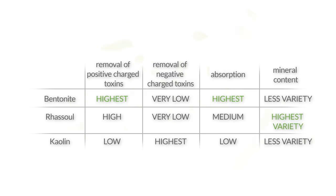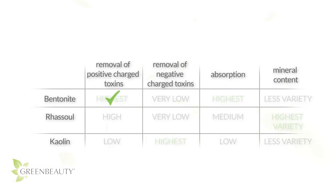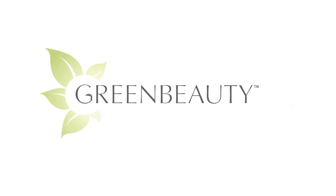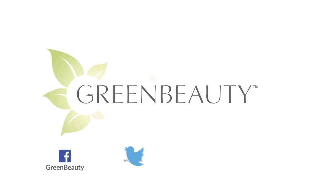What makes bentonite clay special is its high cation exchange capabilities and absorption power. What makes rasul clay special is its high variety of beneficial minerals. And what makes kaolin clay special is its anion exchange capabilities. This is the information we're going to use to make a more effective recipe in the next video. I hope this video was helpful — as always, thanks for watching. See you in the next video.